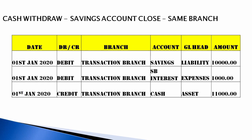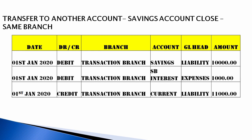For cash withdrawal on savings account closure, the customer is closing the account and withdrawing money: debit the savings bank account for the outstanding balance, debit interest expenses (since we must pay interest on the balance held by the customer), and credit cash — as cash is given to the customer, you reduce the cash asset by crediting it. For transfer to another account on savings account closure at the same branch, debit the savings bank account balance, debit the interest expenses, and credit the current account.